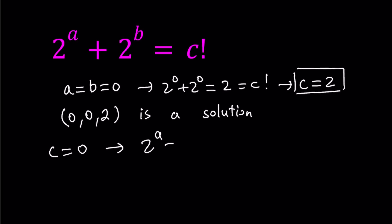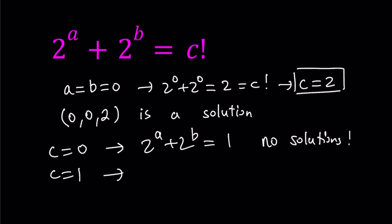If c equals 0, we get 2 to the power of a plus 2 to the power of b equals 0 factorial, which equals 1. Now notice that the smallest power of 2 using non-negative integers is 1, since 2 to the power of 0 is the smallest. So if one term is 1, the other has to be 0 — but 2 to any power can never be 0. So there are no solutions for c equals 0 or c equals 1, since 0 factorial equals 1 factorial.